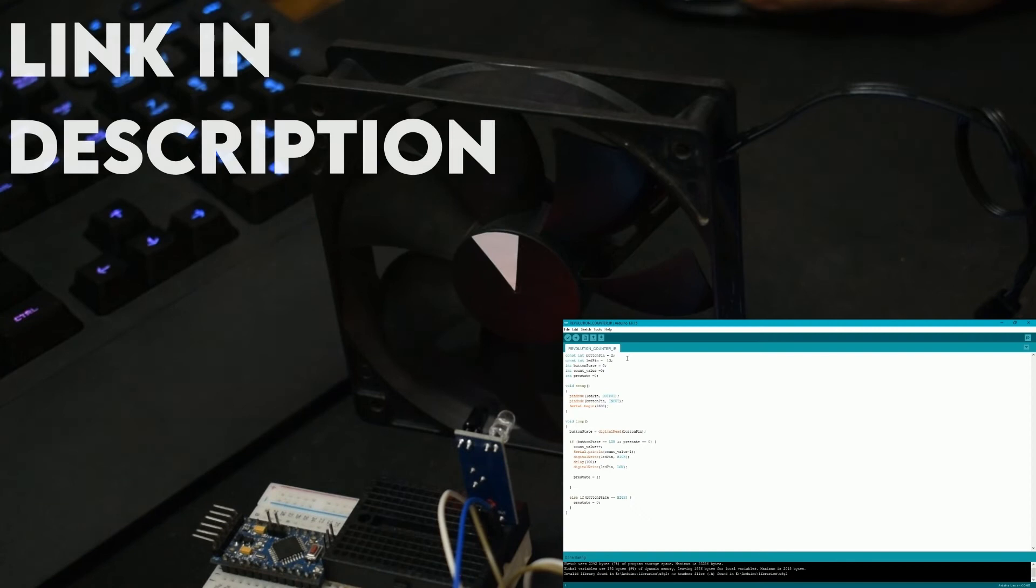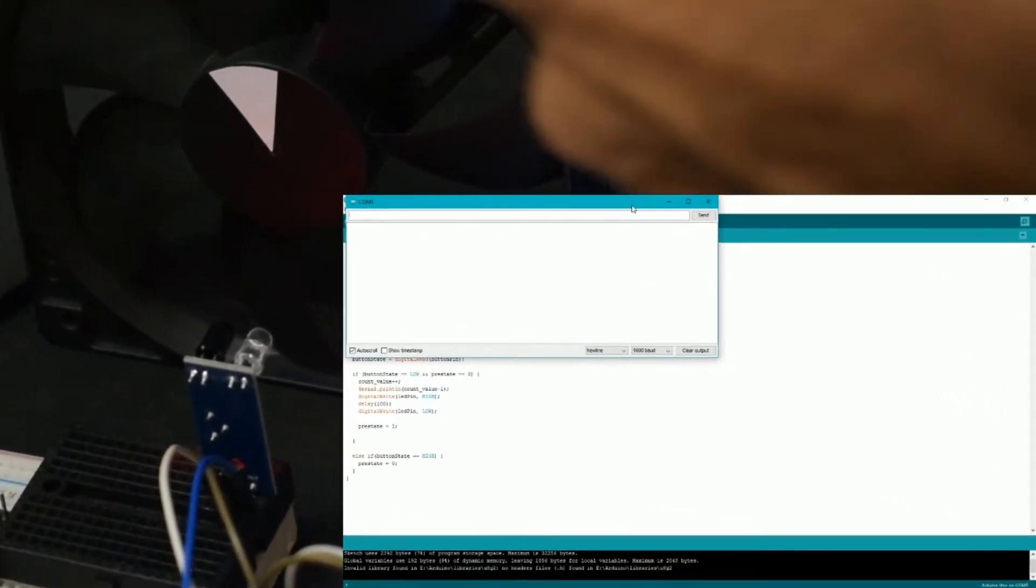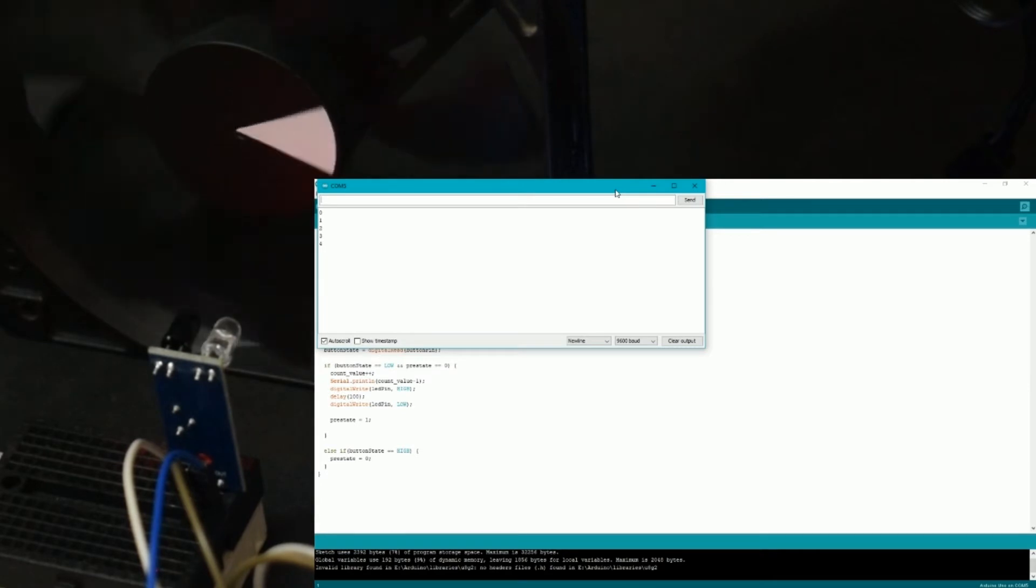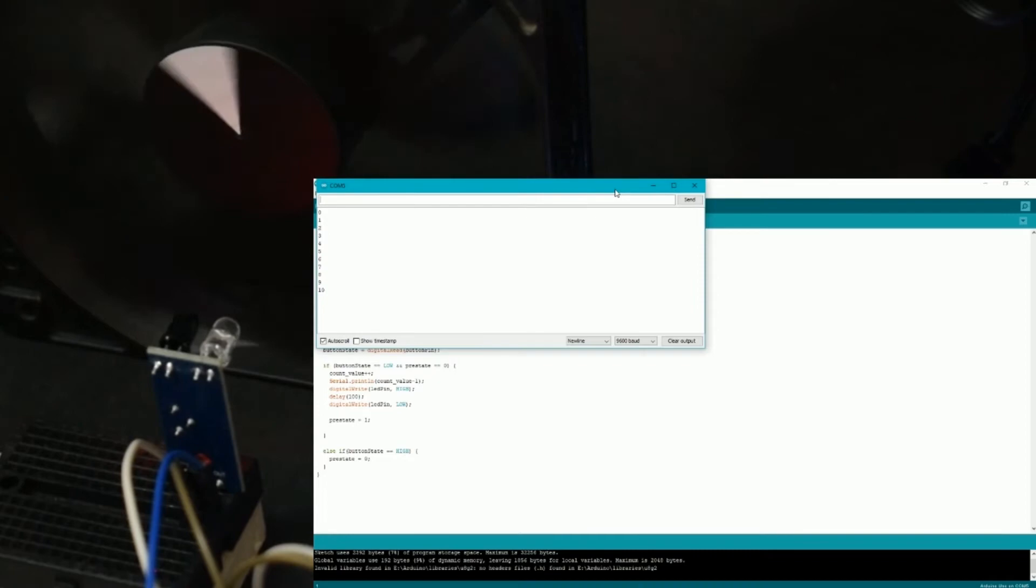Let's also run a program that shows us the number of times the white sector passes through the sensor's detection range. Now that we have a brief idea about the working principle of the tachometer, let's run the final code on it and test it out.